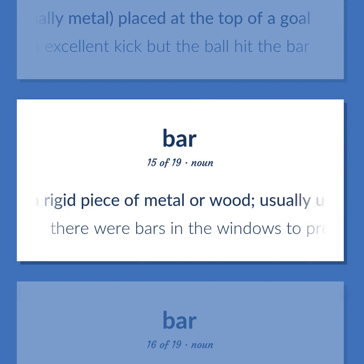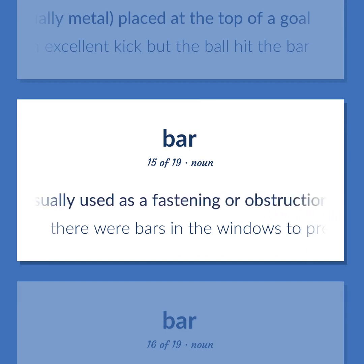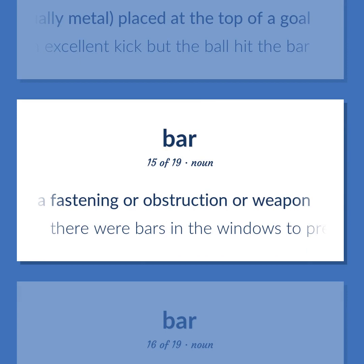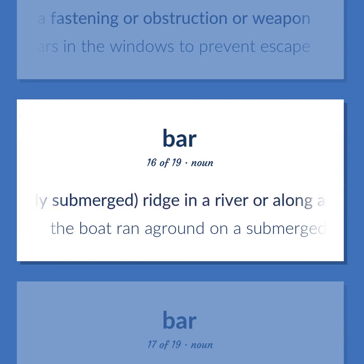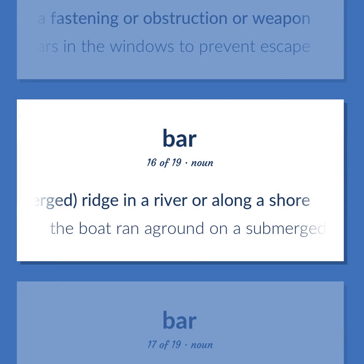A rigid piece of metal or wood, usually used as a fastening or obstruction or weapon. There were bars in the windows to prevent escape. A submerged, or partly submerged, ridge in a river or along a shore. The boat ran aground on a submerged bar in the river.